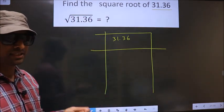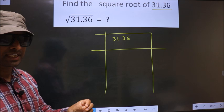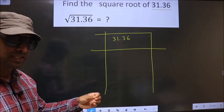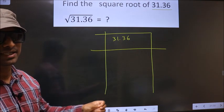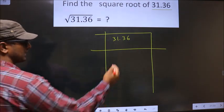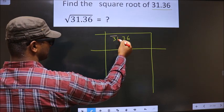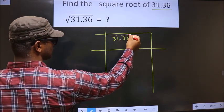Next, we should divide the given number into pairs: numbers before the decimal and numbers after the decimal. So decimal is here. Before the decimal, these two numbers make one pair. After the decimal, these two numbers make another pair.